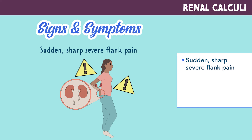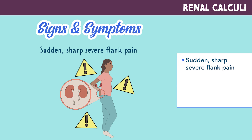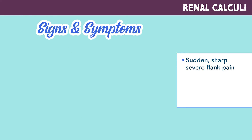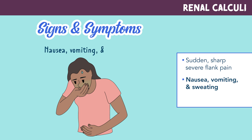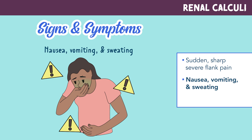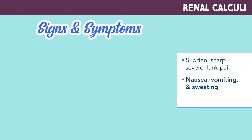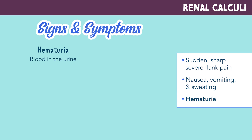Think about where the kidneys are located and where the pain is being felt. They may also experience nausea, vomiting, and sweating, most likely from the pain they're experiencing. And they may experience hematuria, which is blood in the urine.